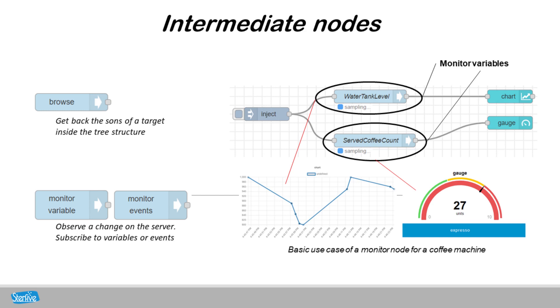On the use case on the right, we subscribe to two variables thanks to a monitor node. Water tank level is the water tank level of a coffee machine object, and served coffee count is the number of coffees that's been served with this machine. The graph shows the evolution of the water tank level, and the gauge the number of served coffees.